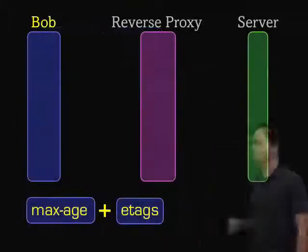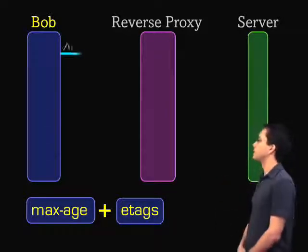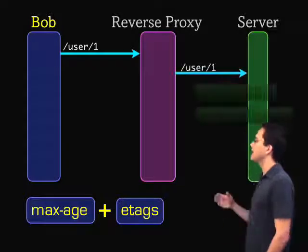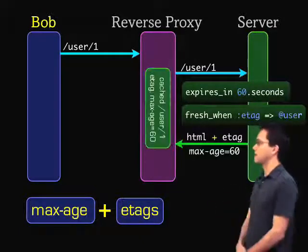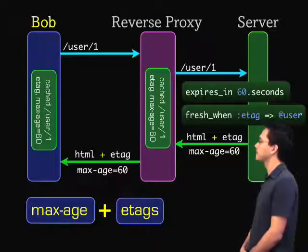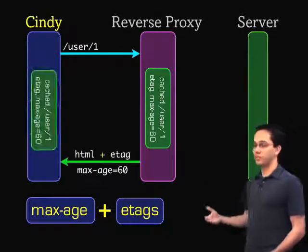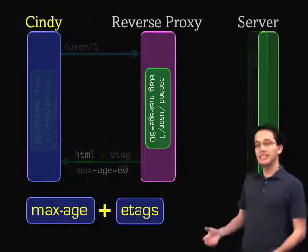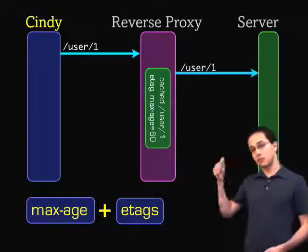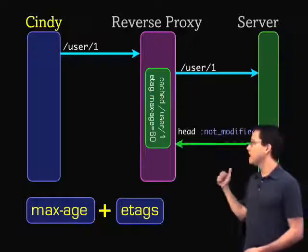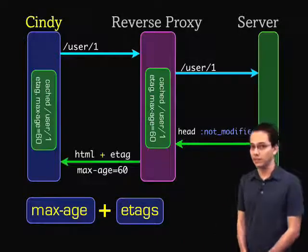Let's look at what happens when we use both a max-age header and an ETags header. Bob's request passes through the reverse proxy, and on our Rails server we have both expires_in 60 seconds and an ETag, which gets sent back to the reverse proxy, cached, and sent to Bob. When Cindy requests the same URL within 60 seconds, we simply serve her from cache. If Cindy comes back after 60 seconds, the reverse proxy checks with the Rails server to see if the ETag is valid. If valid, the reverse proxy can serve up the content for the next 60 seconds.